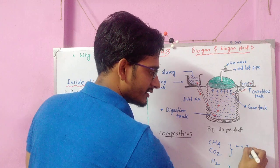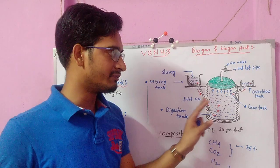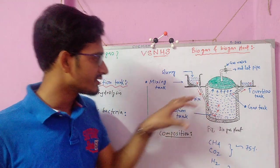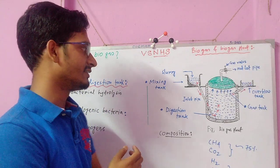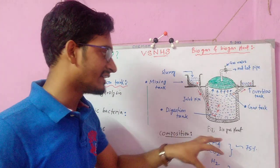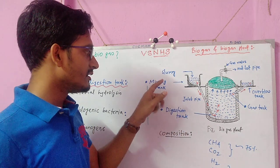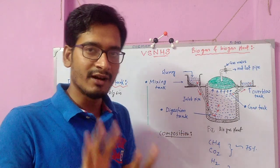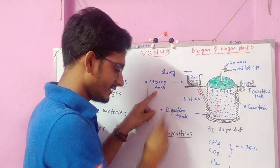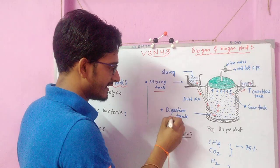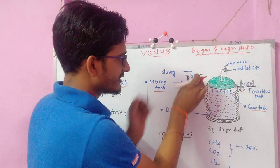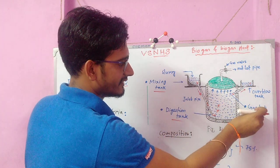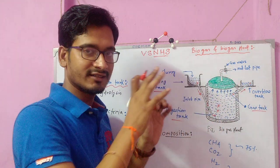About 75% of methane gas is present in biogas. Now let's discuss how this biogas plant works. The plant consists of mainly three parts: the mixing tank, the digestion tank, and the gas tank. This is the mixing tank, this is the digestion tank, and this is the gas tank. This is how the gas is collected.